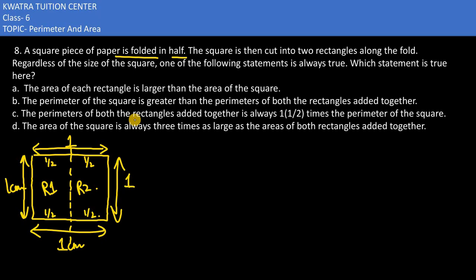Let's ask which statement is true. Out of these 4, which statement is true? What does this mean? Area of each rectangle is larger than the area of square. First, we have area of square.